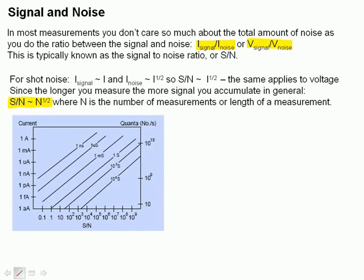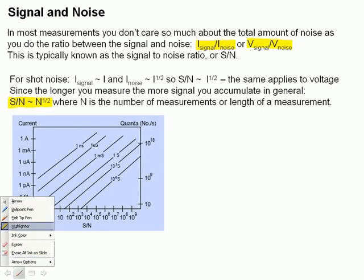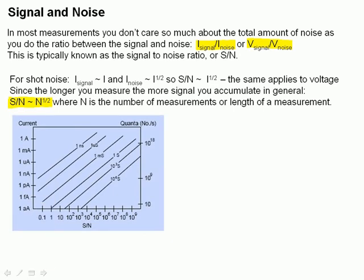And we can see that on this slide right here. If you look at the signal to noise on the x-axis here, the signal to noise ratio increases linearly as the current of your measurement goes along this y-axis here.